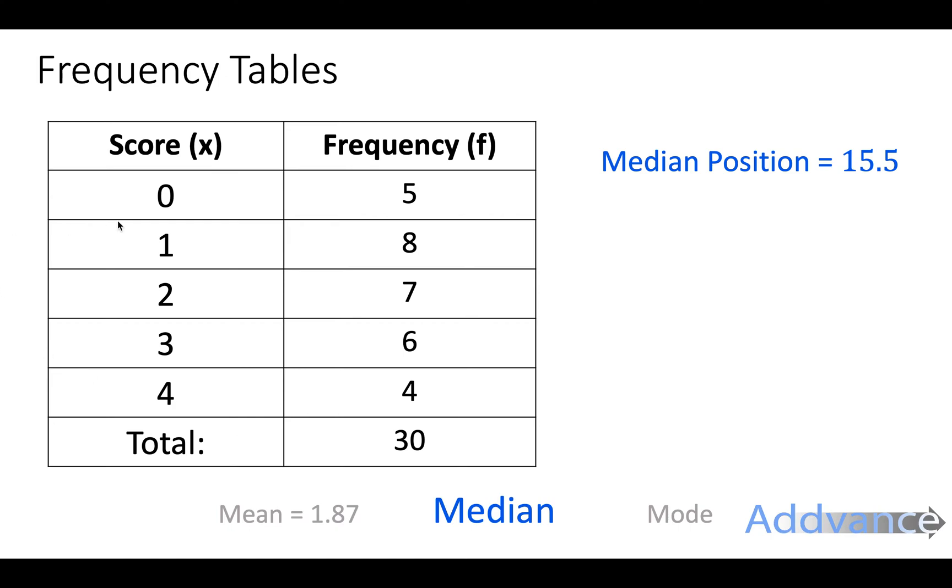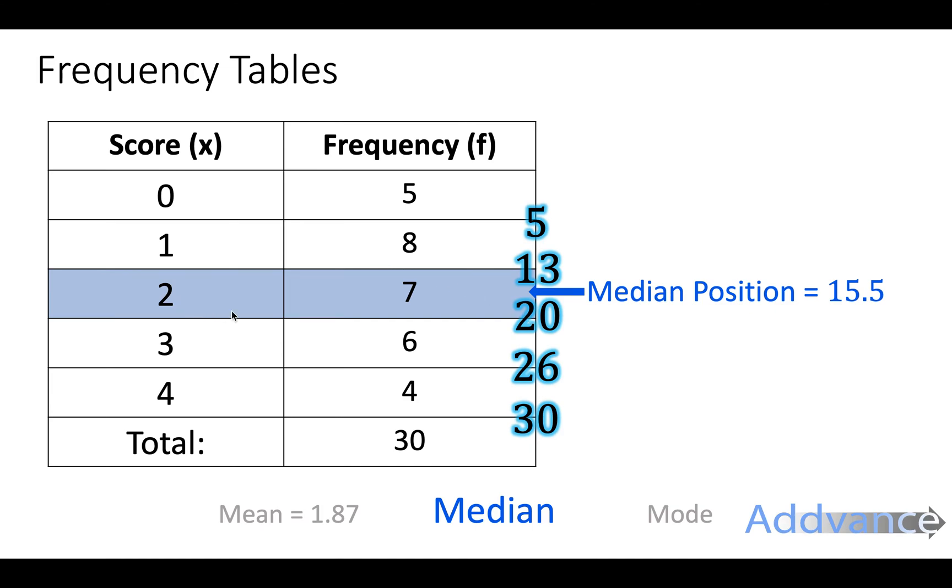Well, the first five scores are 0. The next eight scores make 13, and that's the zeros and the ones added together. The next seven scores make 20, the next six scores make 26, and next four scores make 30. So I'm adding up the frequencies as they go along. Now I know I want to find the 15.5th position, and that's going to be between 13 and 20. So the median position is in this row here, which is a score of 2.